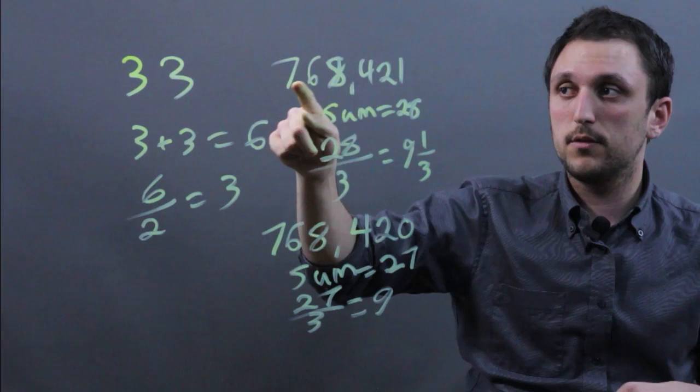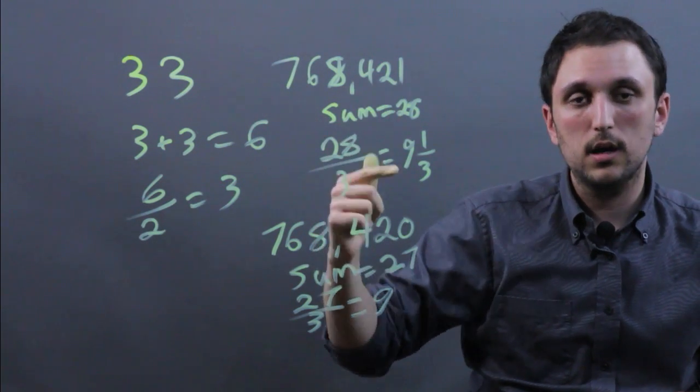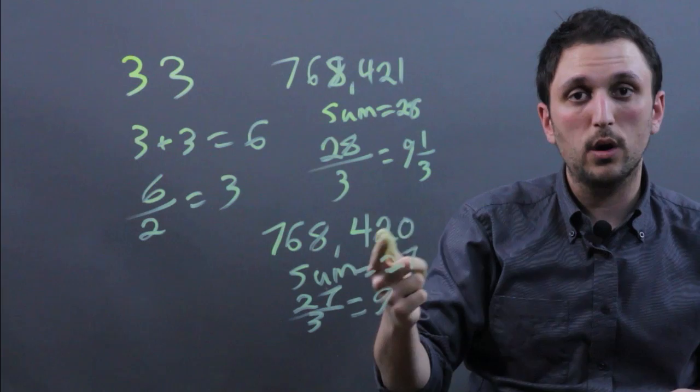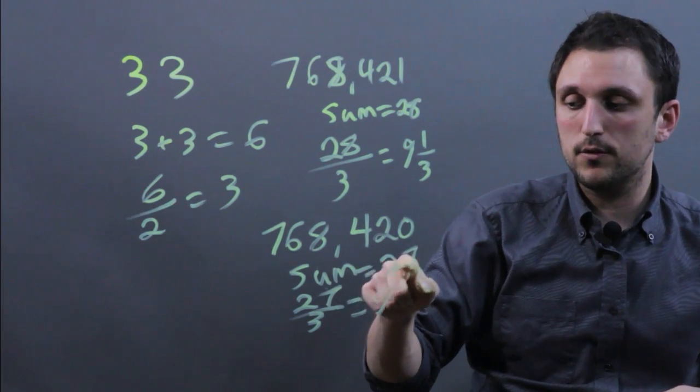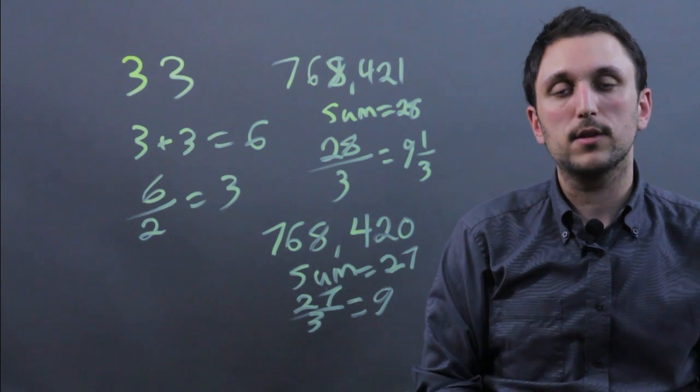So for example, 768,421 is not, but 768,420 is, because here the sum was 27 and 27 is cleanly divisible by 3. Thanks a lot.